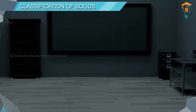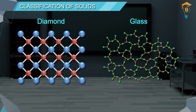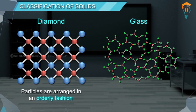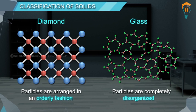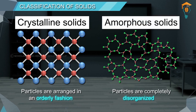Classification of solids: if you look at diamond and glass, both are solids, but at the microscopic level there is a difference in arrangement of constituent particles. In diamond the particles are arranged in an orderly fashion, whereas in glass they are completely disorganized. Based on this order of arrangement, solids are mainly classified into two types: crystalline solids and amorphous solids.